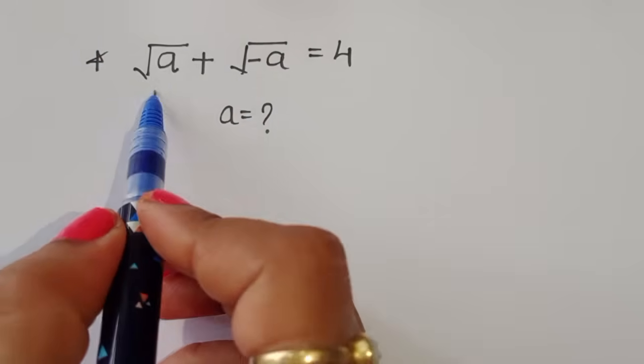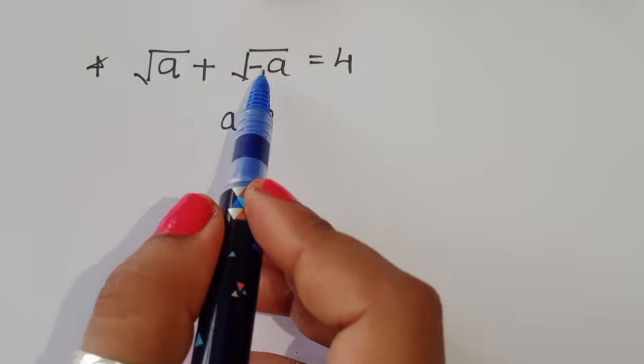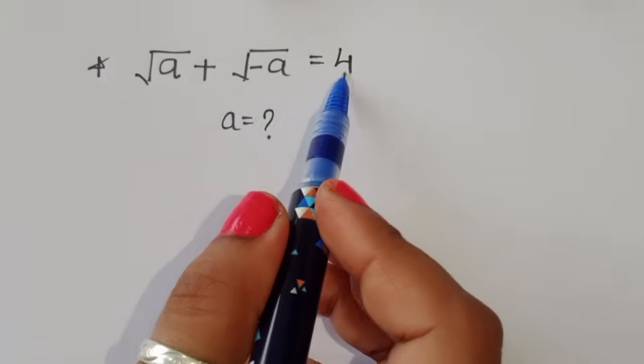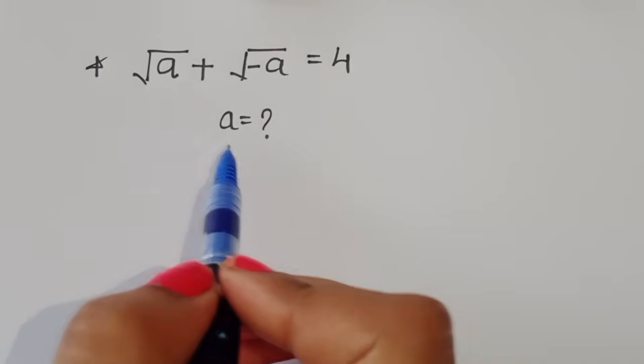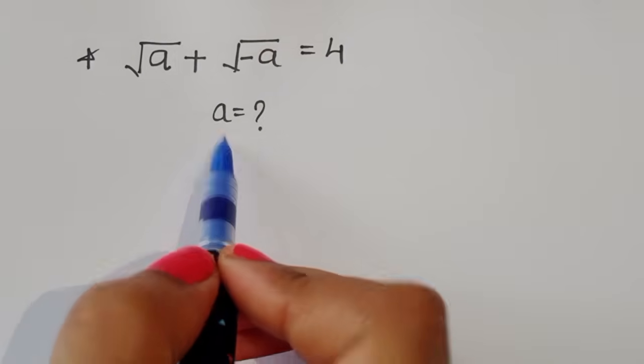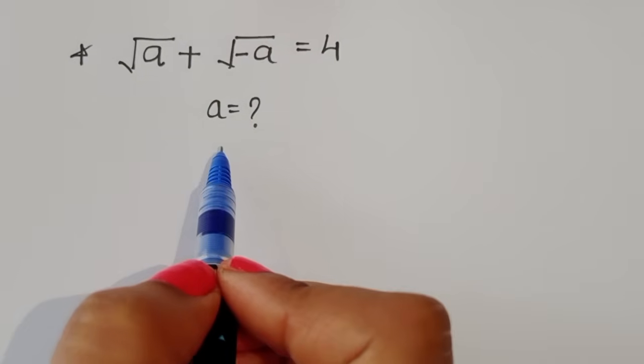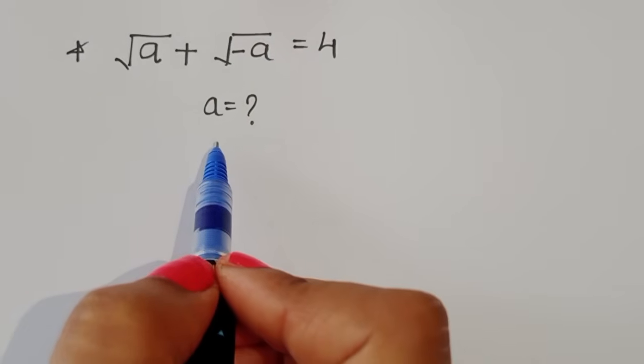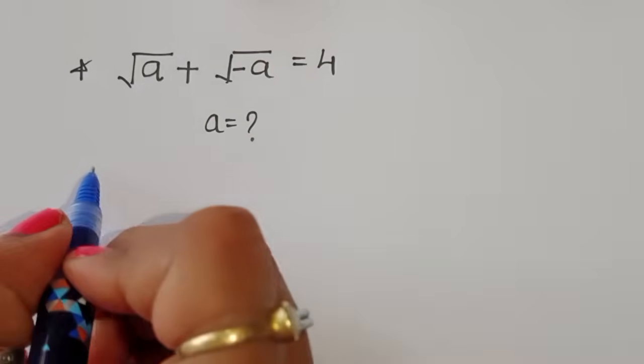The question is: given that the square root of a plus the square root of minus a is equal to 4, we have to find out the value of a and how we can find out the value of a with a complete solution.